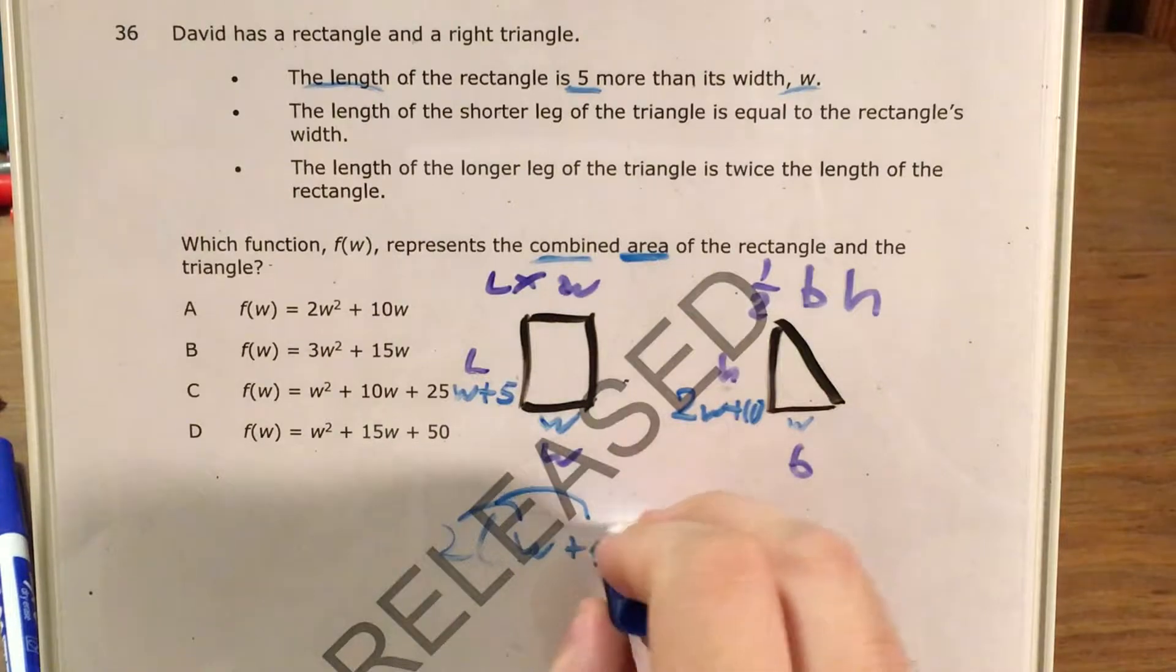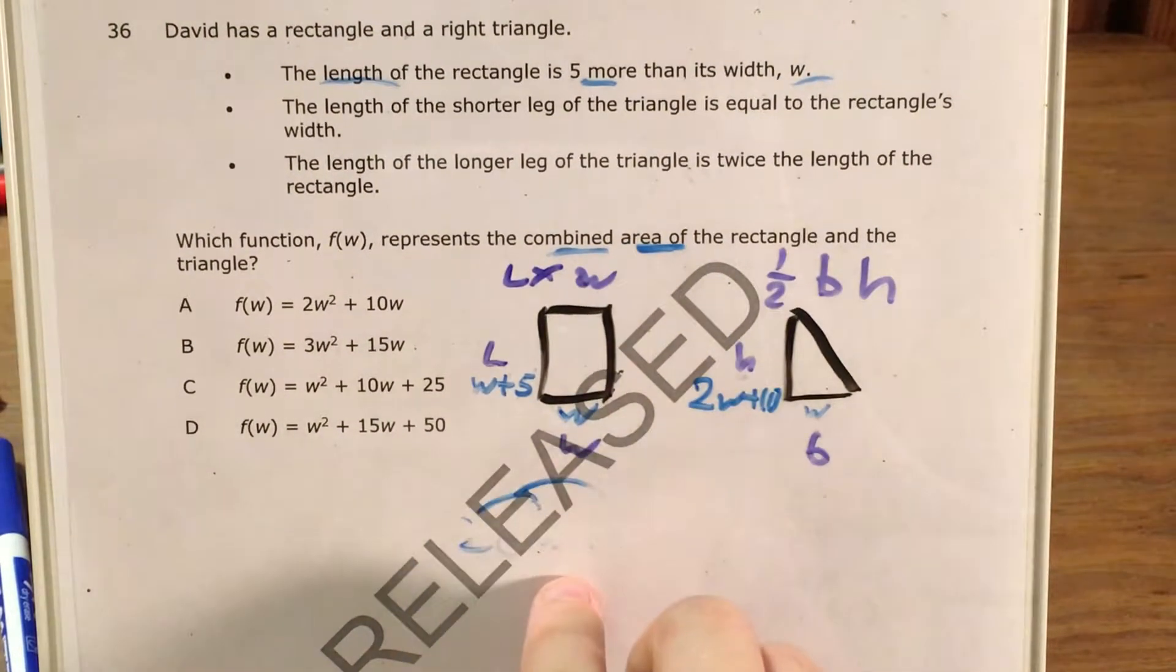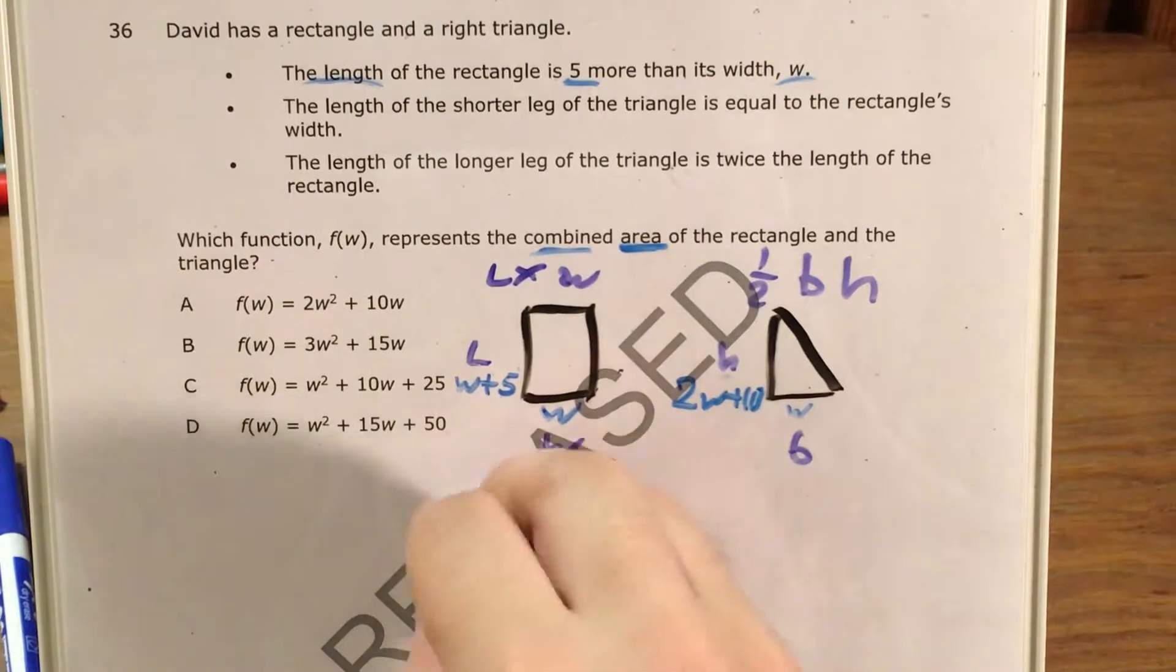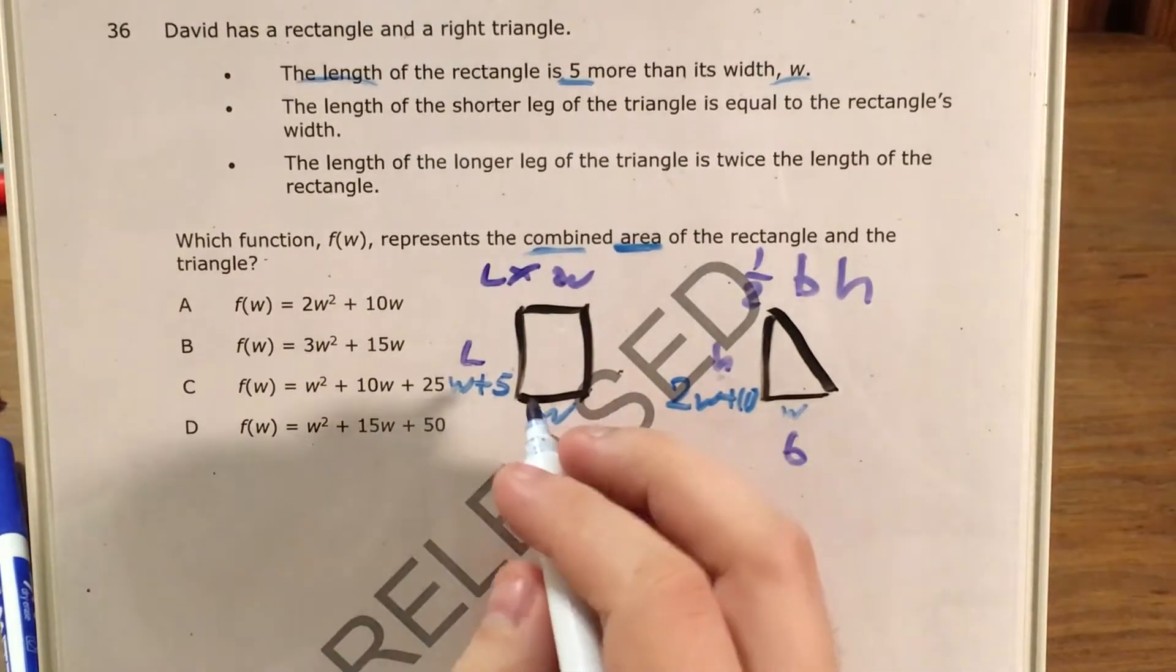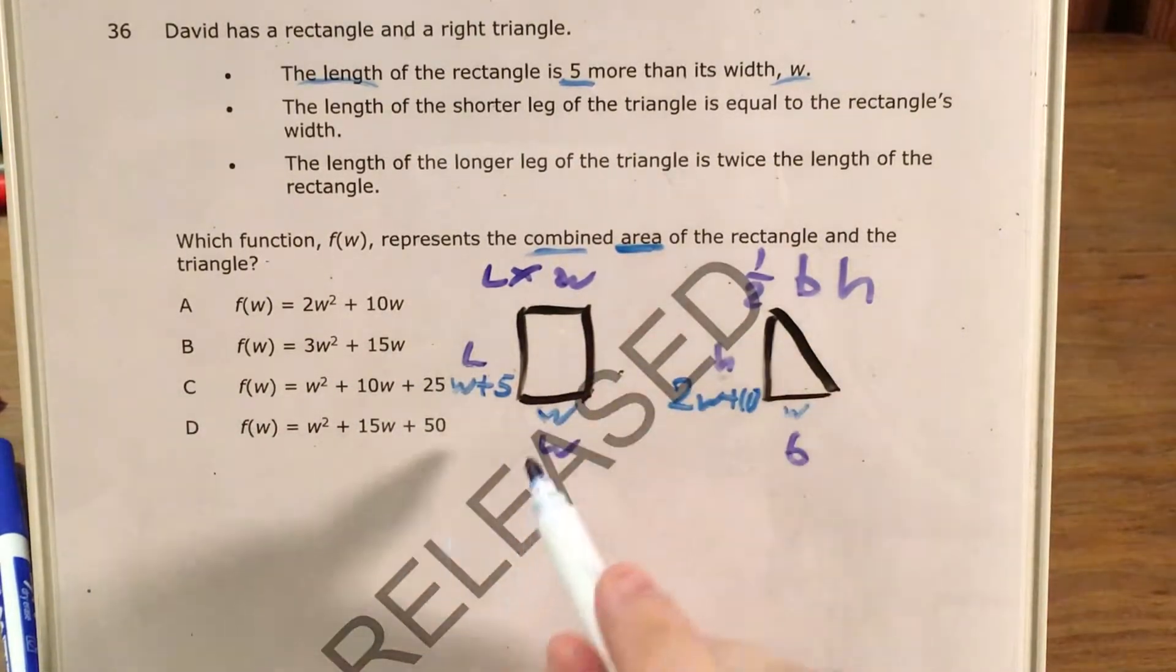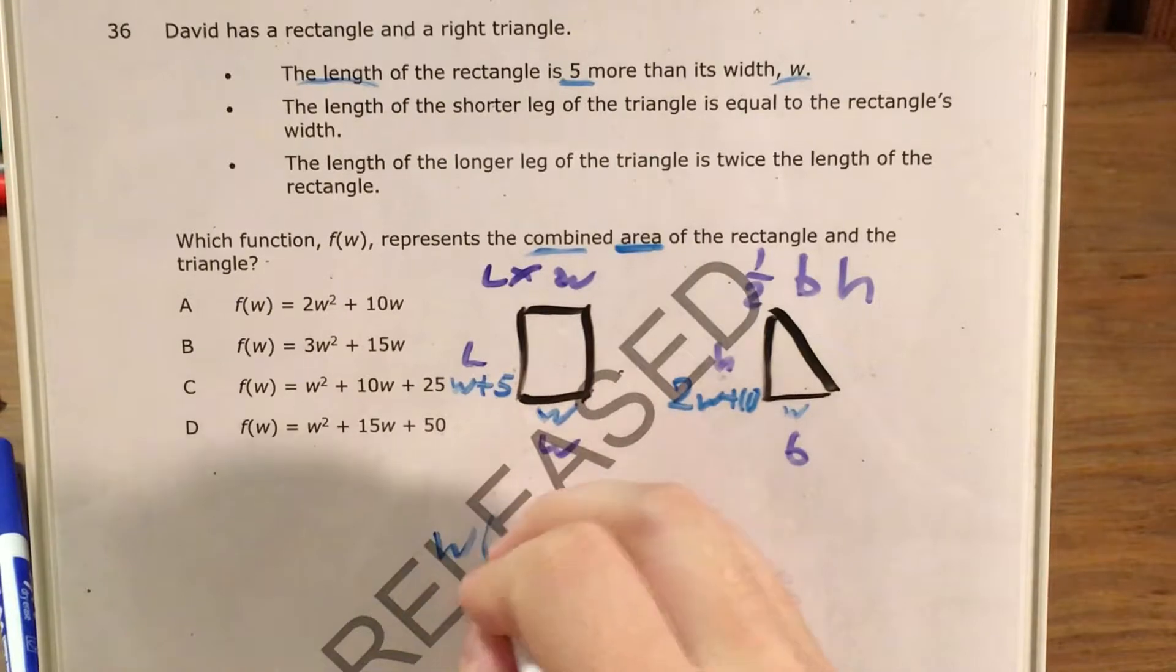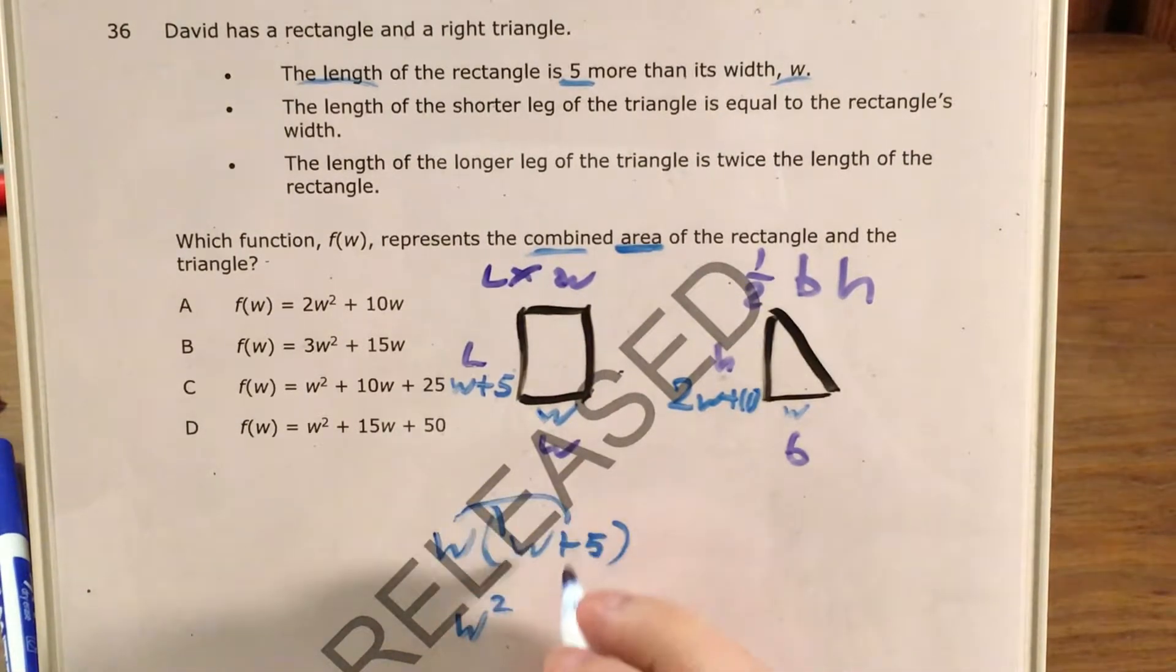So now I have all the information I need to actually use my area formulas and figure out the areas of each individual shape and then combine them. To start with the rectangle, this is length times width, and this is going to be W times (W plus 5). Once again, I use the distributive property. W times W is W squared. W times 5 is 5W.